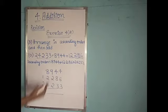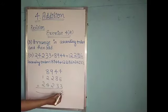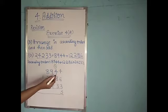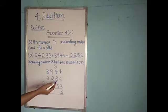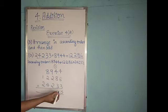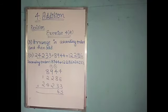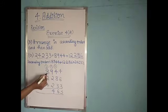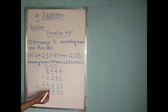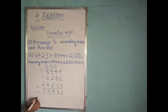Now we will start addition from the ones place. 4 plus 6 is 10, 10 plus 3 is 13 — so I write 3 and carry 1. 1 plus 4 is 5, 5 plus 8 is 13, 13 plus 3 is 16 — write 6 and carry 1. 1 plus 9 is 10, 10 plus 2 is 12, 12 plus 2 is 14 — write 4 and carry 1. 1 plus 8 is 9, 9 plus 2 is 11, 11 plus 4 is 15 — write 5 and carry 1. 1 plus 1 is 2, 2 plus 2 is 4. So the answer is 45,463.